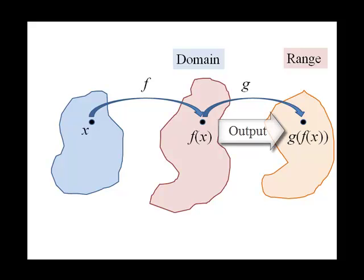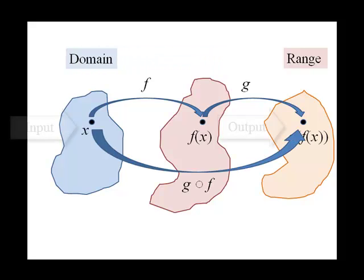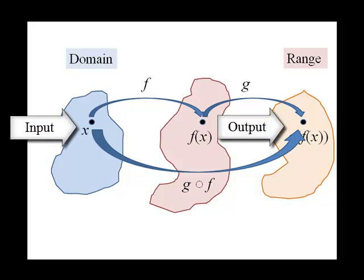So we have a two-step process. f mapped x to f of x, and g mapped f of x to g of f of x. What a composition does is turn that into a single step that has a domain, which is the domain of f, and a range, which is the range of g.